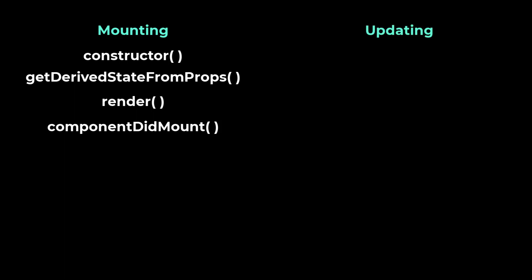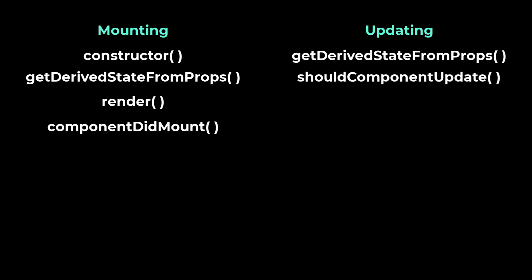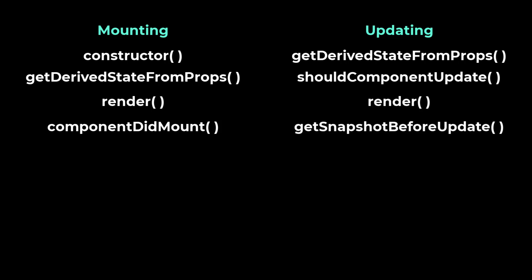The first time a component instance renders, it does not update. Starting with the second render, a component updates every time it renders. An update can be caused by changes to props or state. These methods are called in the following order when a component is being re-rendered: getDerivedStateFromProps, shouldComponentUpdate, render, getSnapshotBeforeUpdate, and componentDidUpdate.